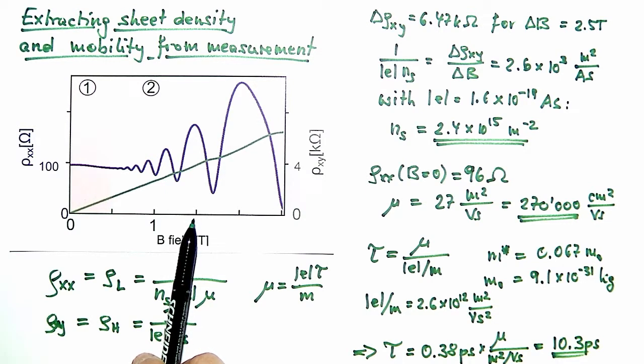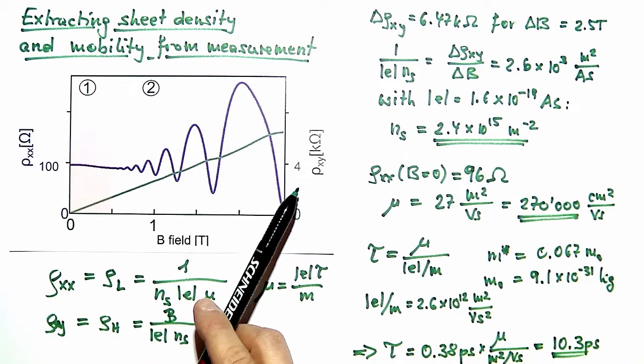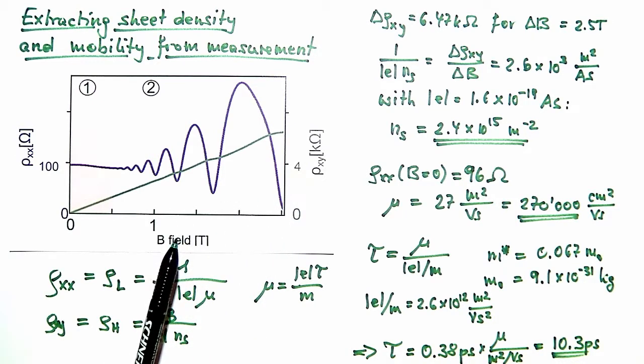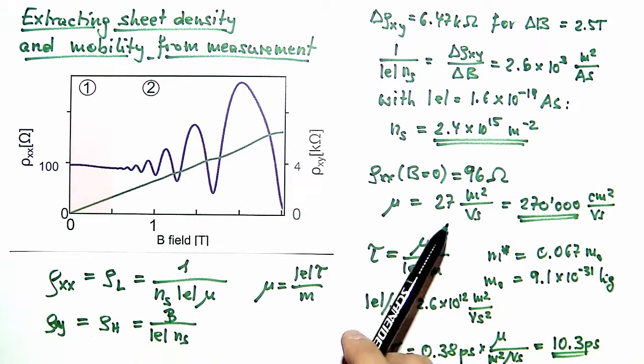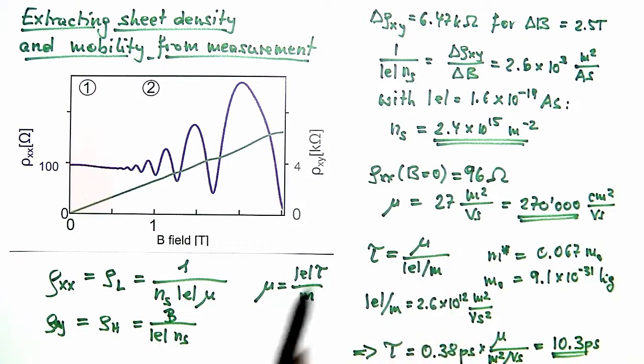The inverse of that, 2 thirds, would be the mobility. But then there is the factor of 40, so we have 80 thirds. 80 divided by 3 is roughly 27. So we get 27 meters squared per volt second in agreement with the mobility that we found here.